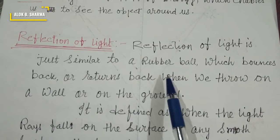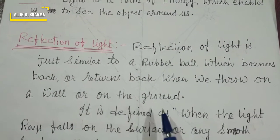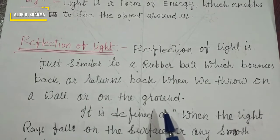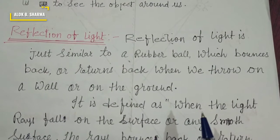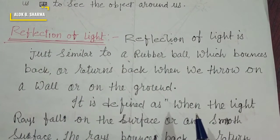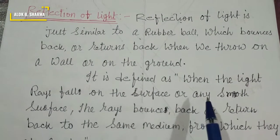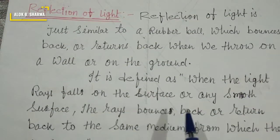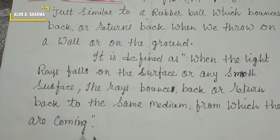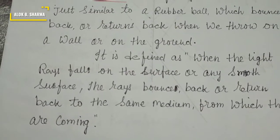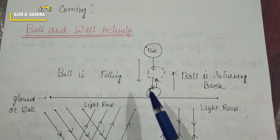Reflection of light is just like a rubber ball that bounces back when thrown on a wall or on the ground. Similarly, light rays return back or bounce back when they fall on any smooth surface. So reflection is defined as: when light rays fall on any smooth surface, the rays bounce back or return to the same medium from which they came.